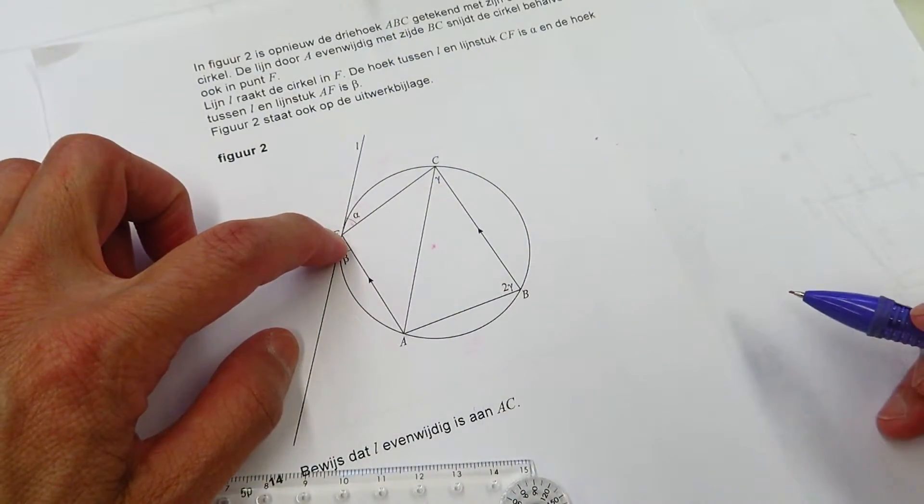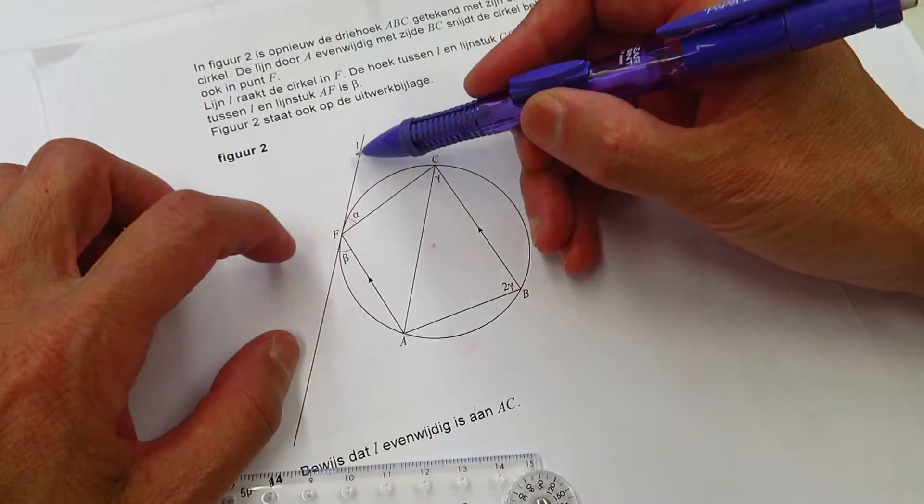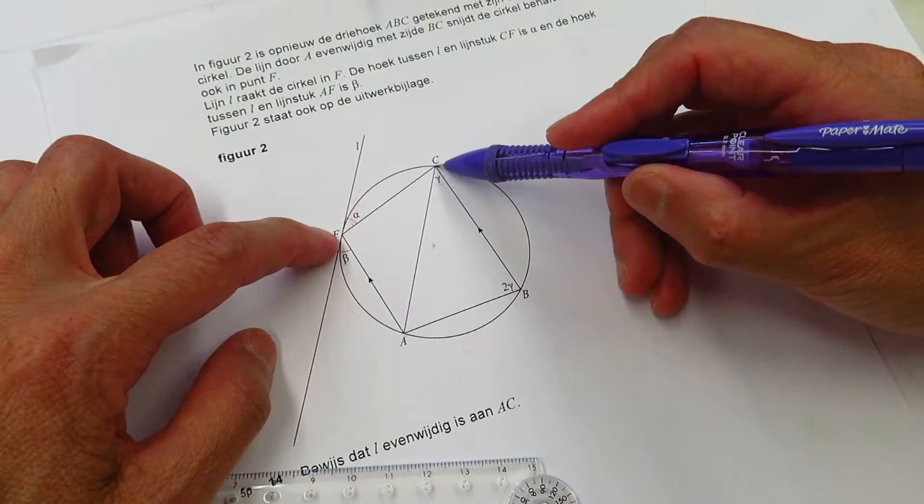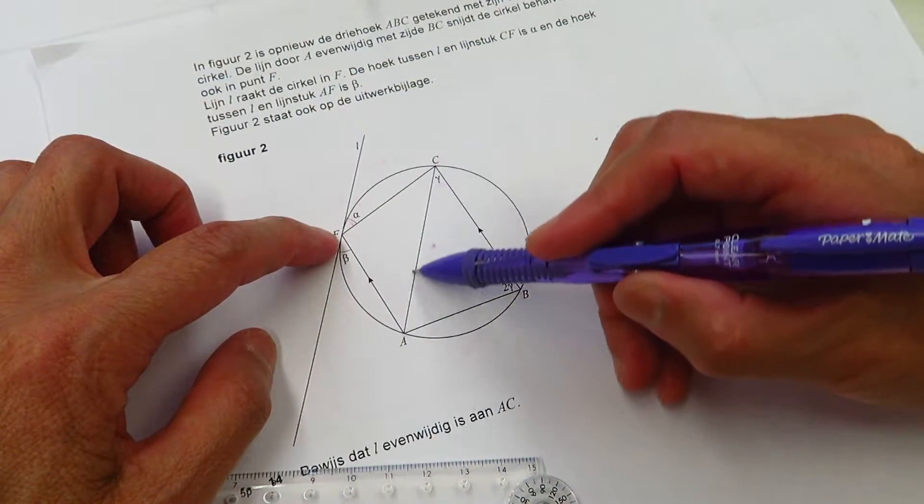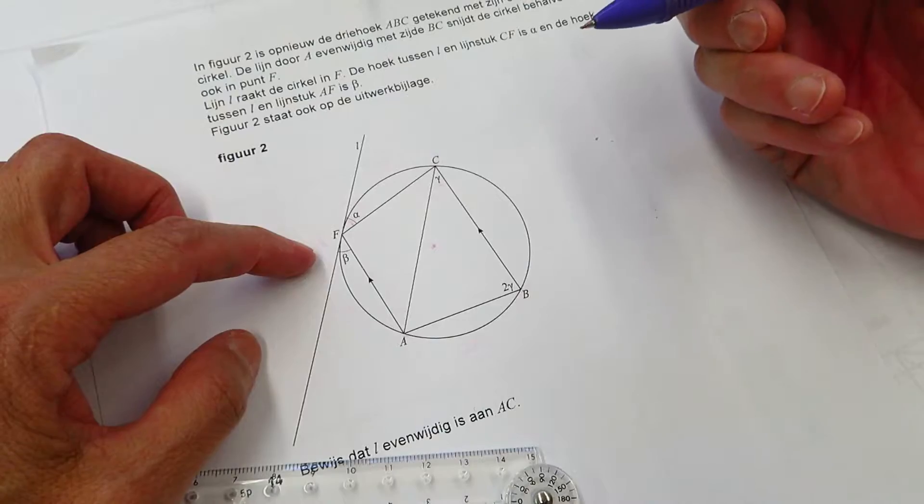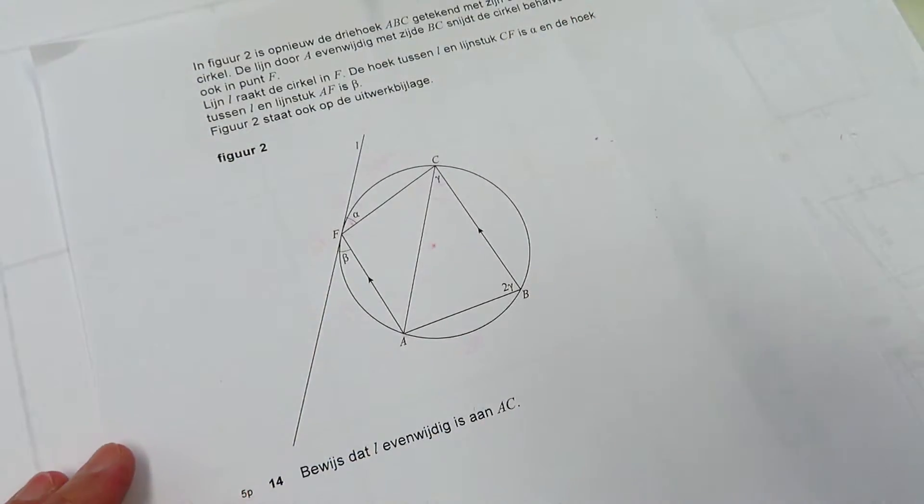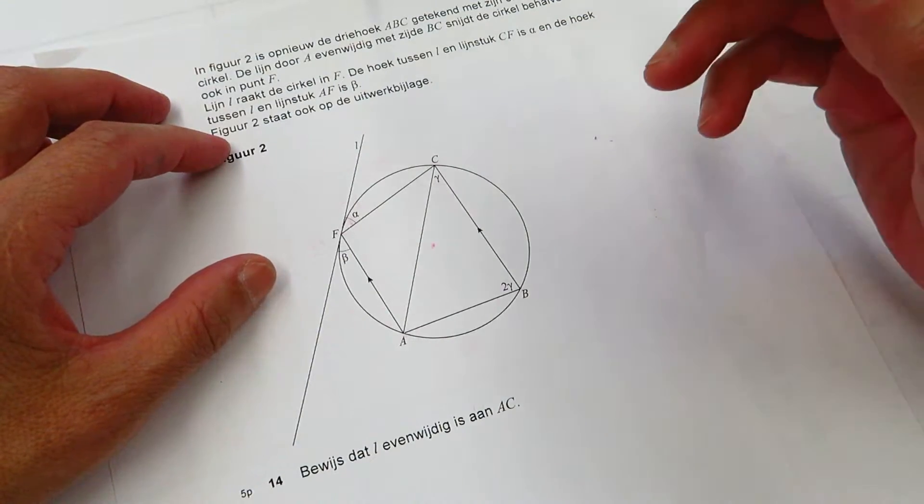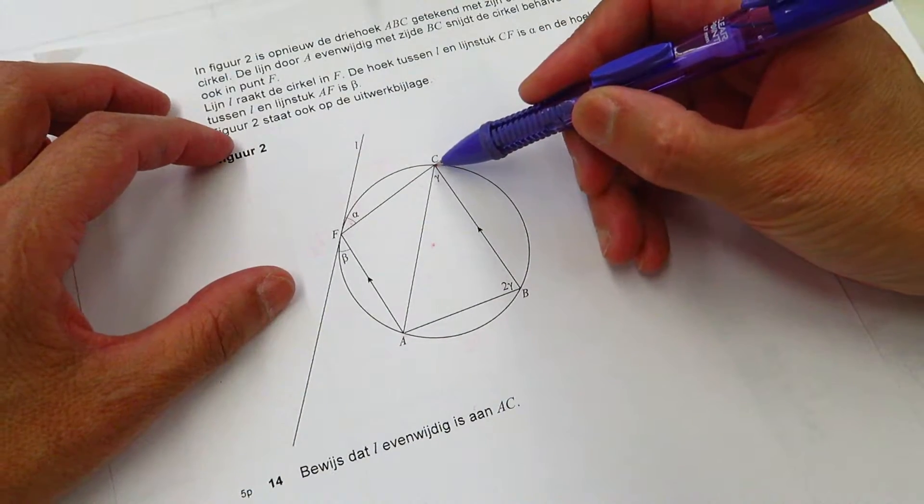Now what we need to prove, we need to prove the tangent line is parallel to AC, this line, the side of the triangle. I will put the question in the description of this video. So let's do it.